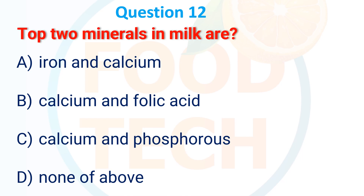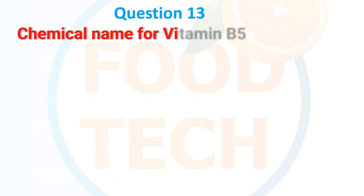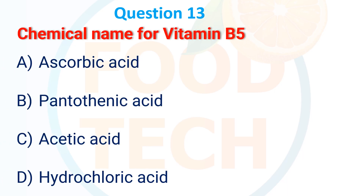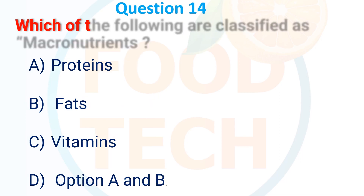Question 12: The top two minerals in milk are — A. Iron and Calcium, B. Calcium and Folic Acid, C. Calcium and Phosphorus, D. None of the above. The answer is C. Calcium and Phosphorus. Question 13: Chemical name for Vitamin B5 — A. Ascorbic Acid, B. Pantothenic Acid, C. Acetic Acid, D. Hydrochloric Acid. The answer is B. Pantothenic Acid.